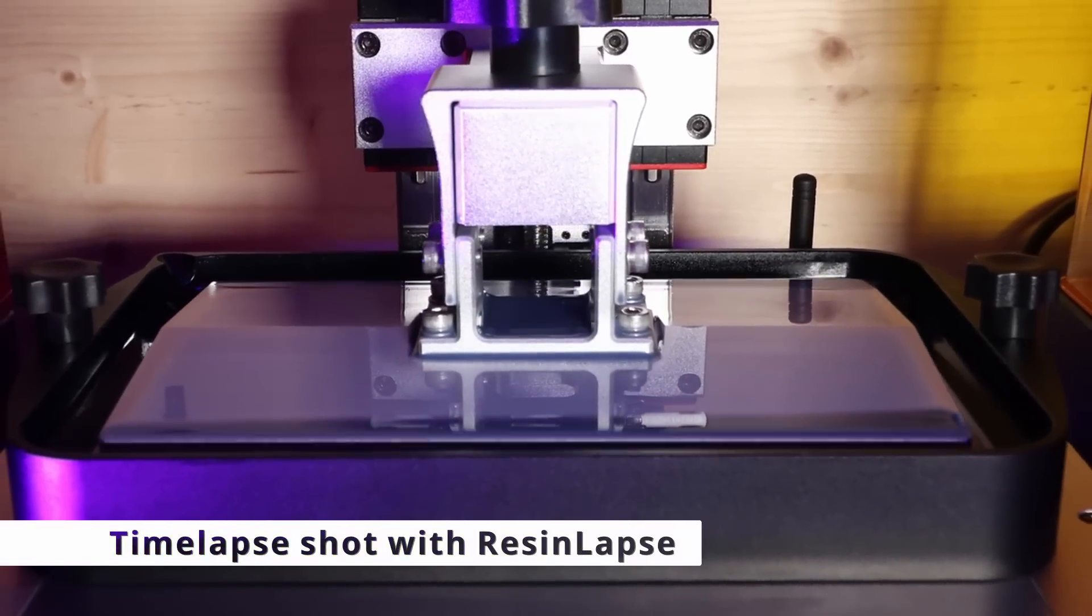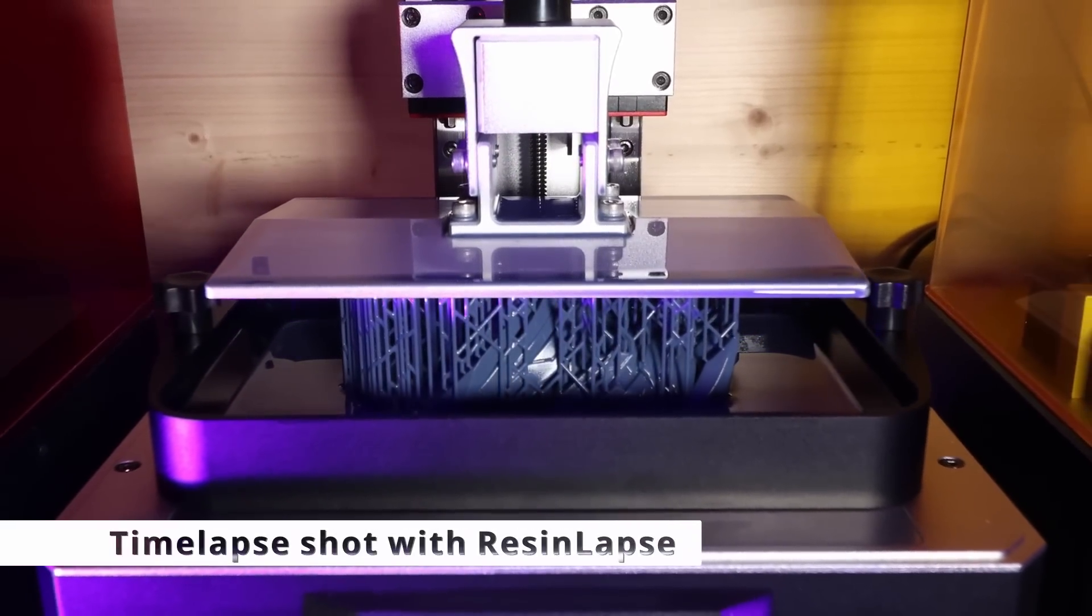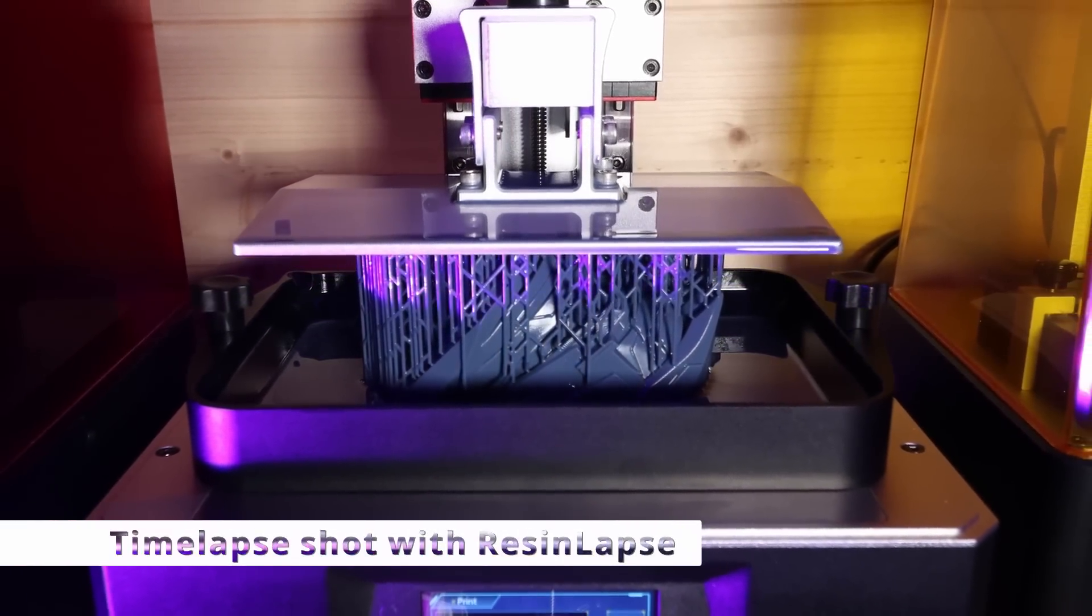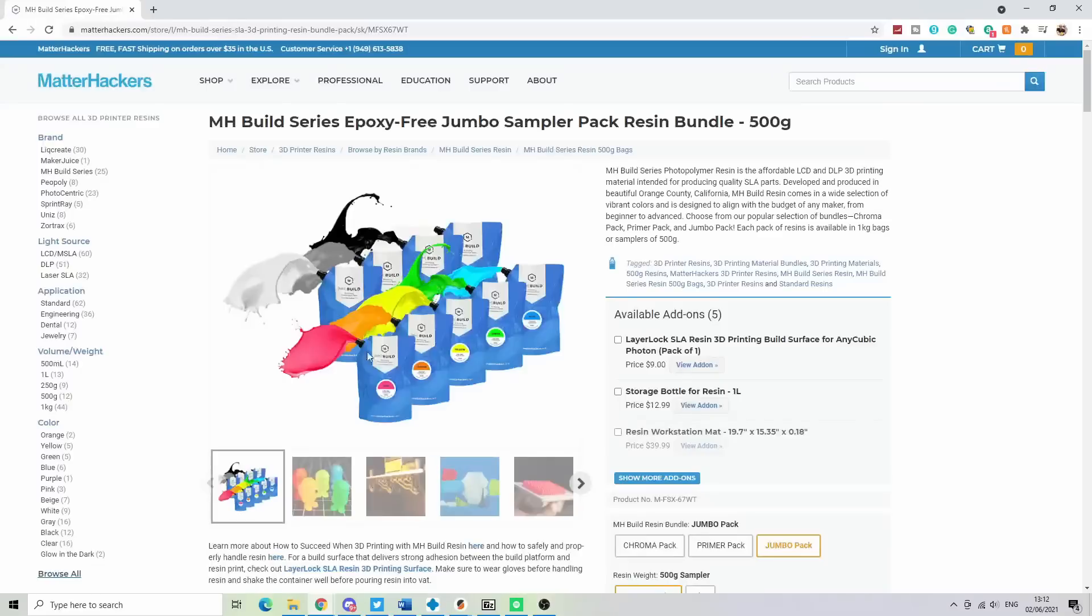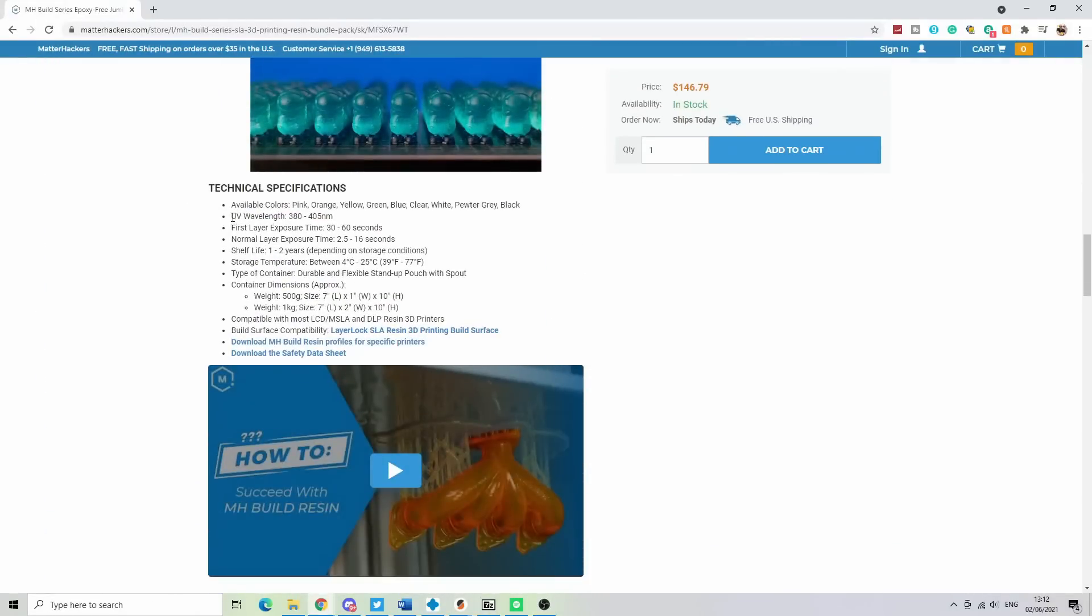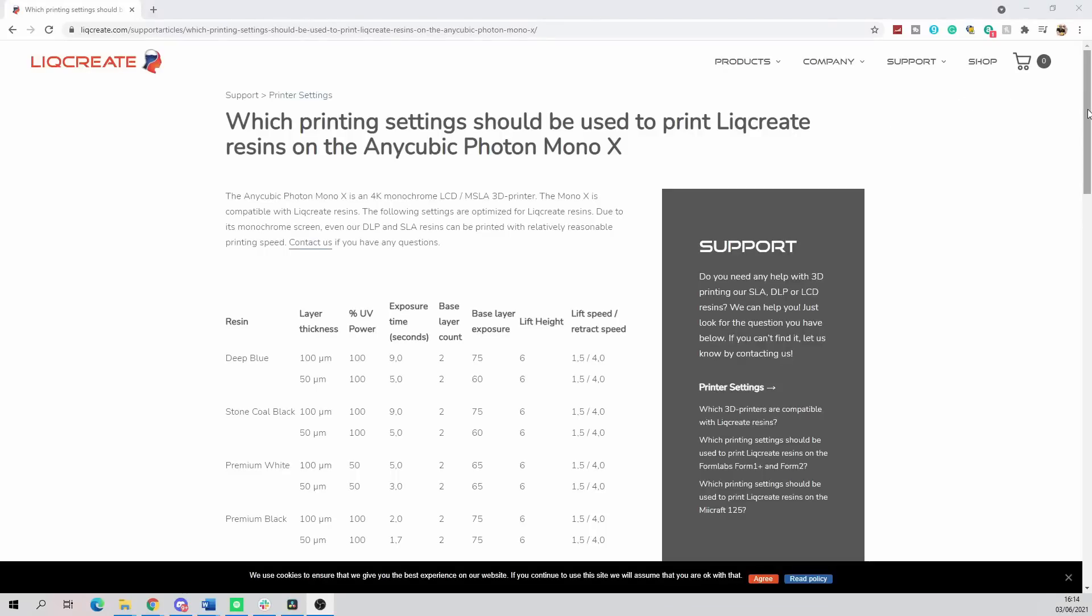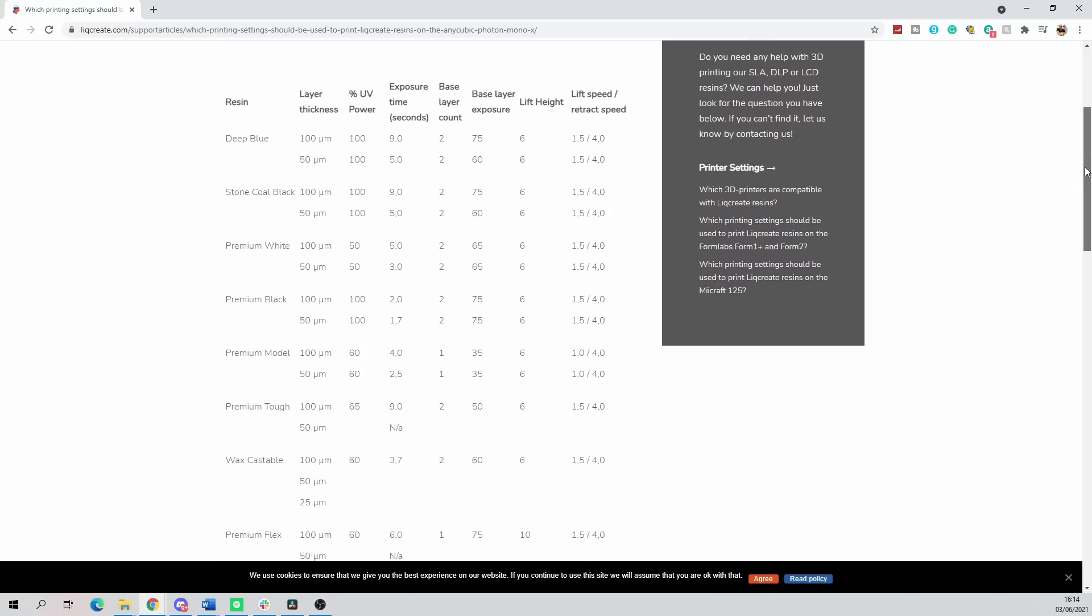The reason I have all this unopened resin is because I couldn't find a profile for a specific resin on a specific printer and always felt intimidated by the concept of playing around with resin. Now although many companies offer base numbers for exposure, bottom layers, etc. for their resins, you still have to take into account the temperature you're printing at, the printers you are using, basically many variables which can alter the result.